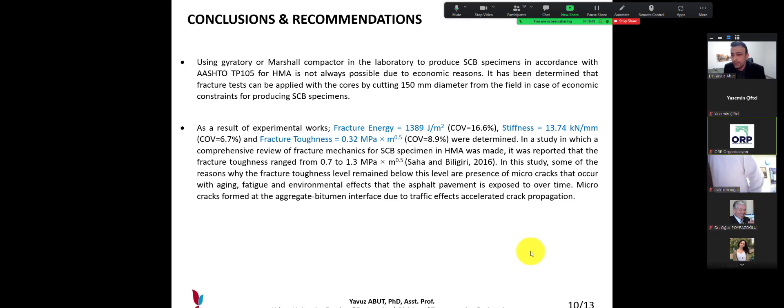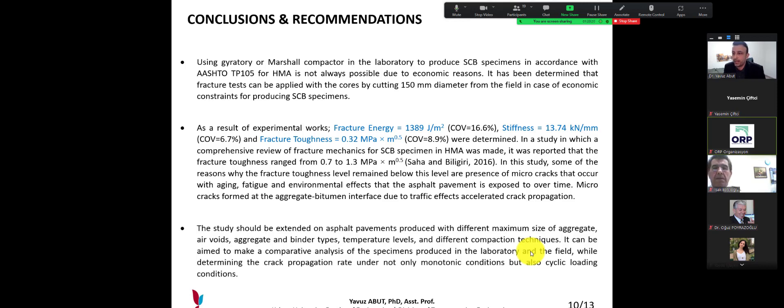In this study, some of the reasons why the fracture toughness remained below this level are presence of micro cracks due to the axle loads and environmental effects that occur with aging, fatigue and environmental effects that the asphalt pavement is exposed to over time. Micro cracks from the air to aggregate bitumen interface due to the traffic effects accelerated crack propagation.